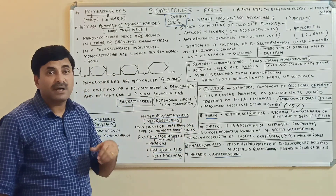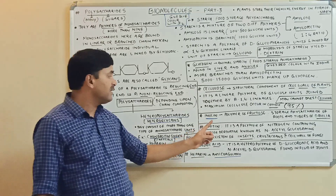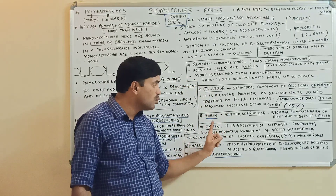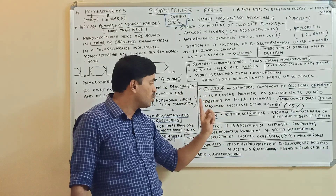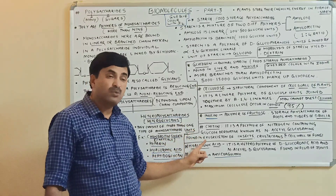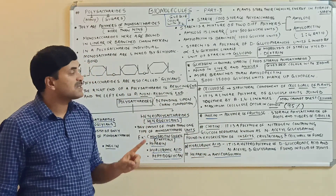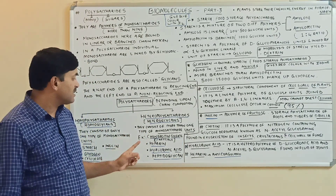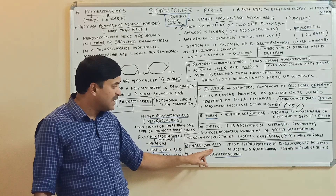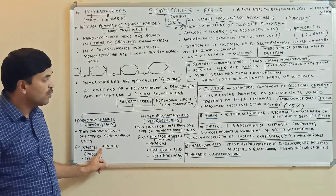Chitin is the second most abundant polymer. It is a polymer of a nitrogen-containing glucose derivative known as N-acetylglucosamine. Chitin is found in the exoskeleton of certain arthropods such as insects and crustaceans, and also in the cell wall of fungi. Chitin is also a homopolysaccharide.